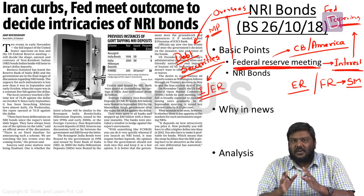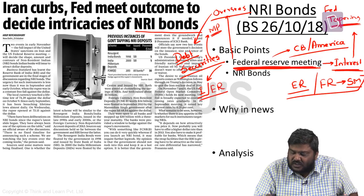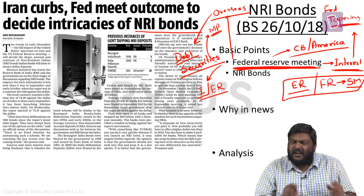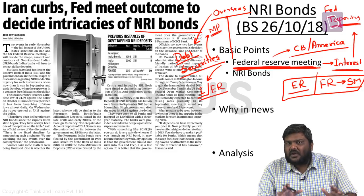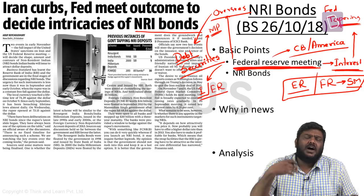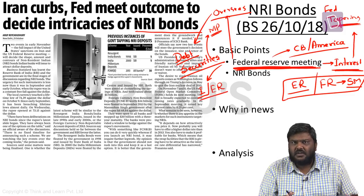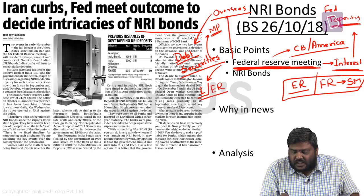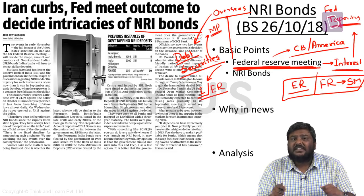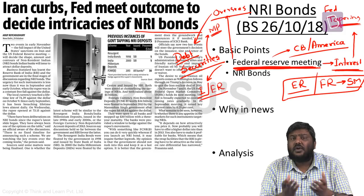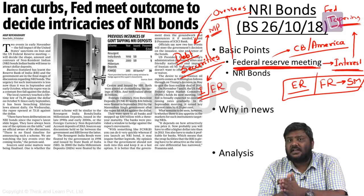Whenever a Federal Reserve meeting happens, there is fear of all these indicators worsening for India. Whenever there has been an outflow of dollars because of the Federal Reserve meeting, RBI has stepped in and controlled the situation. So remember - whenever a Federal Reserve meeting is approaching, there will be discussions about what kind of volatility it will create in the forex market as well as the stock market.